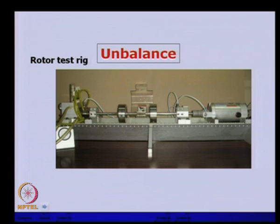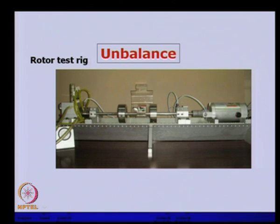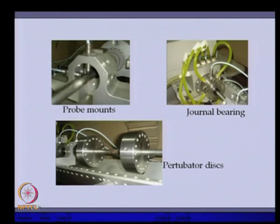Components mounted loosely on the shaft — like discs, gears, or flywheels — can also produce this changing response behavior. Moisture entering a hollow shaft, which varies in amount and location during operation, is another potential cause. Now, coming back to unbalance: this is a typical rotor with a motor, fluid film bearing, bush bearing, and two discs mounted on a flexible shaft. There are provisions to measure vibrations at several locations using proximity displacement probes.